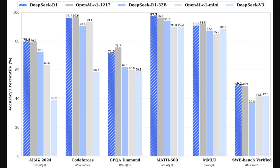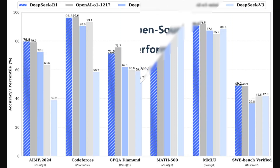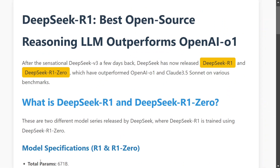The model outperforms on SWE, MATH 500, and AIME, so the model is looking great. Since it is open source as well, it's the right time to start using these models for reasoning purposes. We can very easily say that DeepSeek R1 is the best open source reasoning model currently available.